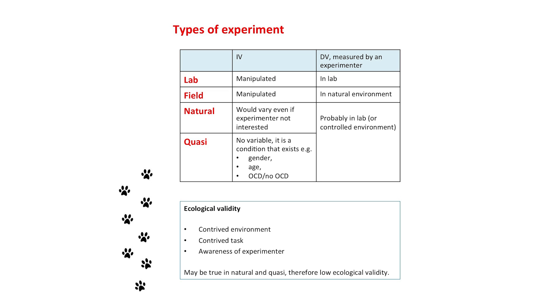In the case of a lab experiment you are measuring someone's behavior in a lab, but the same is true for a natural experiment and a quasi-experiment — or at least it could be. If you're looking at whether boys and girls have different memories, you might measure that in a lab. The place where you measure determines artificiality, and more importantly, where it was measured influences whether participants were aware they were being studied. That awareness — not the environment itself — is what makes a study artificial. If you know your behavior is being studied, you change your behavior.